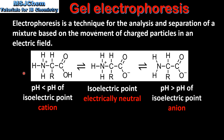As we saw in a previous video, the charge on an amino acid depends on the pH. At a pH which is lower than the pH of its isoelectric point, the amino acid has a positive charge and forms a cation. At its isoelectric point, an amino acid has both a positive and a negative charge, therefore it is electrically neutral. At a pH which is greater than the pH of its isoelectric point, an amino acid has a negative charge and forms an anion.